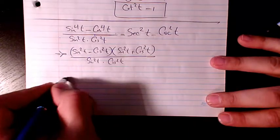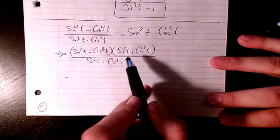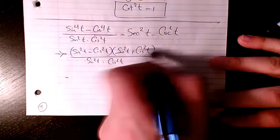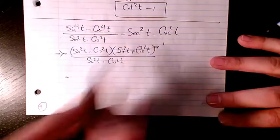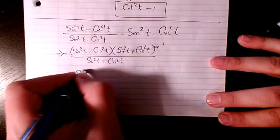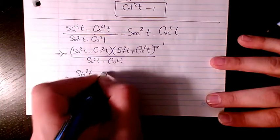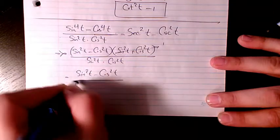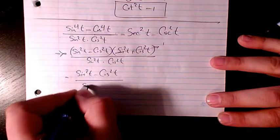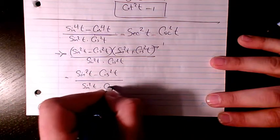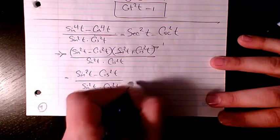As you know, sine squared t plus cosine squared t always equals 1. So I will have sine squared t minus cosine squared t divided by sine squared t times cosine squared t.